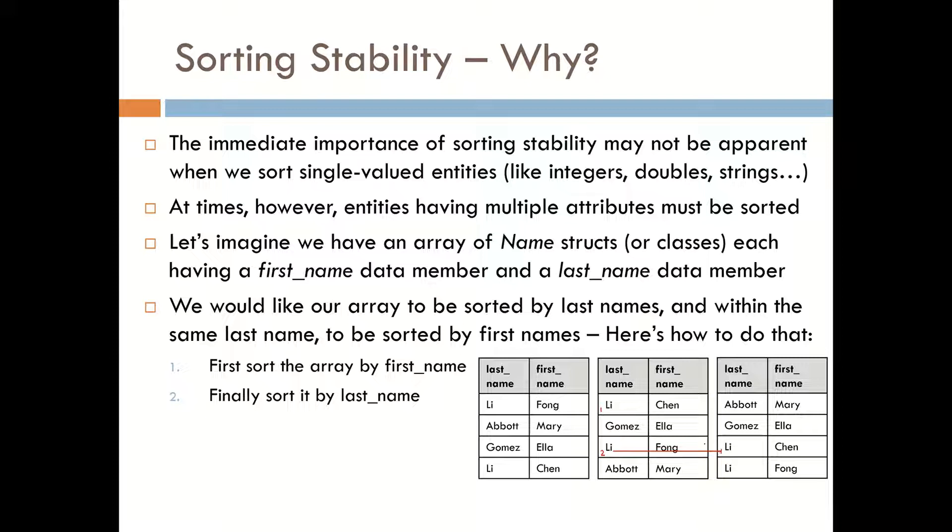So that here is here's individual number one and here's individual number two. And with respect to one another, we retained what was an unsorted array from the standpoint of last names. We retained that when we sorted the array by last name. So hopefully you can see the importance. This example shows the importance of sorting stability.